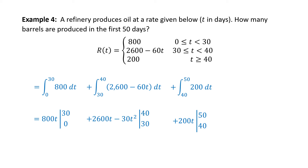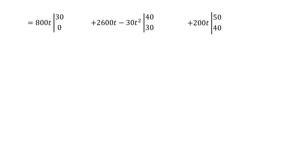Three separate integrals for the three separate time intervals. Let's evaluate 800T from 0 to 30: that's 800 times 30 minus 0, giving a difference of 24,000.